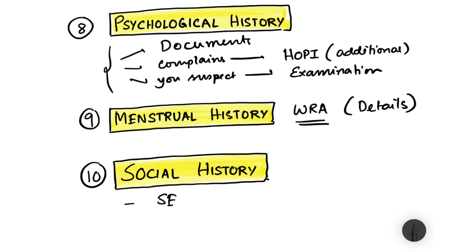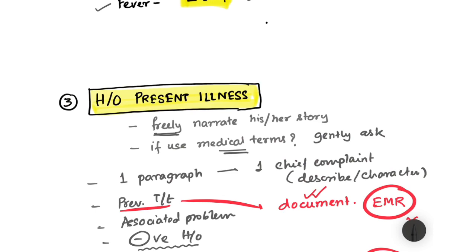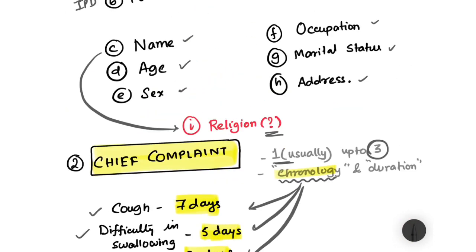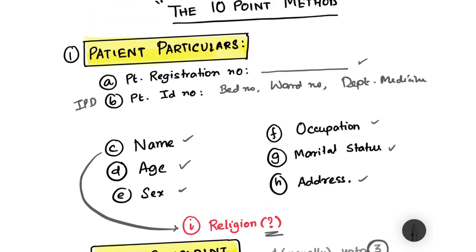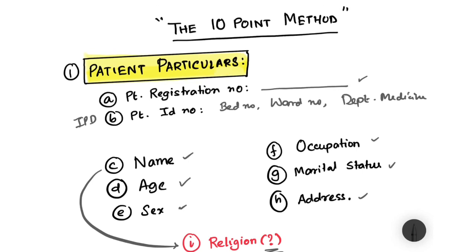Finally, ask about social history — the patient's socioeconomic condition, whether they live in an urban or rural household, overcrowding in the family, level of education, and nature of housing. Socioeconomic status influences many disorders. This is the 10-point method of history taking. Practice this format whenever you see patients in the clinics — history taking is an art and a skill you master with repeated practice. Modify this method as per your department, medical school, or professor's requirements.